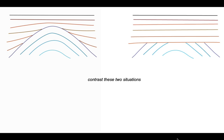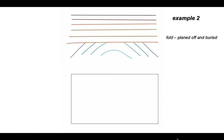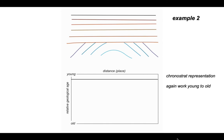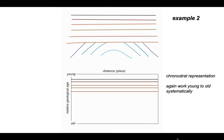Now we contrast example one, shown on the left, with example two on the right, which shows a fold planed off and then buried. Again, we draw the chronostrat diagram plotting horizontal distance against relative age, old at the bottom, young at the top, and again we work back through time starting with the youngest rocks. The upper horizons are found right across the diagram and are shown as continuous lines — there are no missing rocks, no non-deposition.